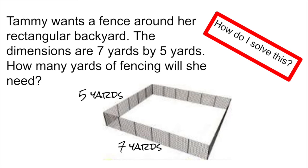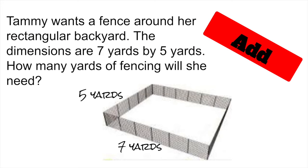After discussing, you should have come up with: add. This is not an area problem. I want to talk about this because I want to make sure you're understanding the difference between area and perimeter. Area would be the inside of the backyard — all of the yard. Since the fence goes around the edges, you're going to be adding all the sides together. So you would have seven plus seven plus five plus five, which gives you 24 yards.